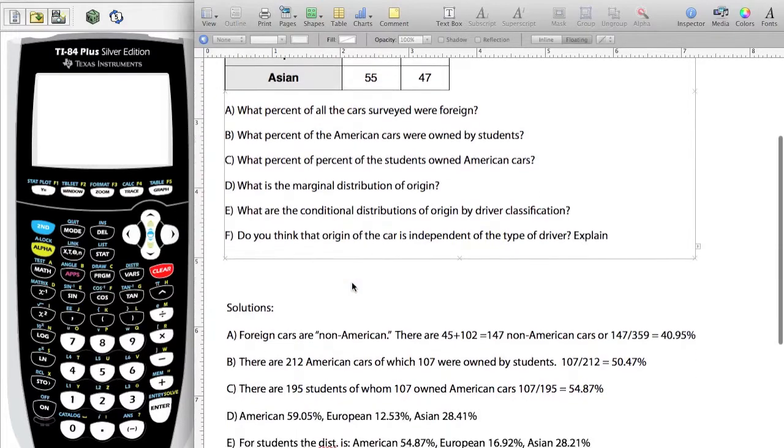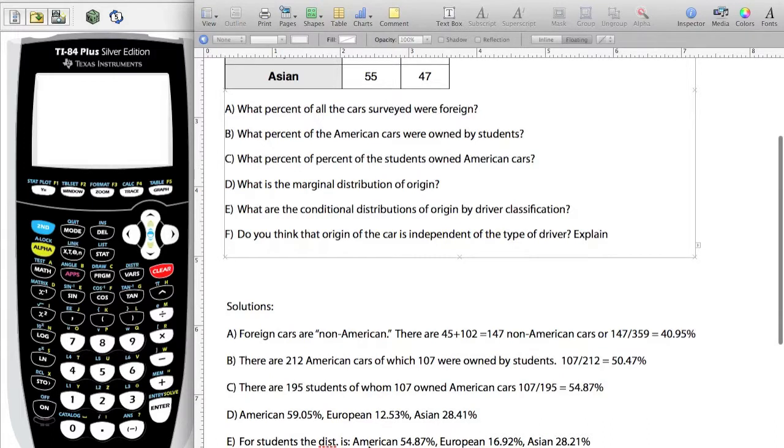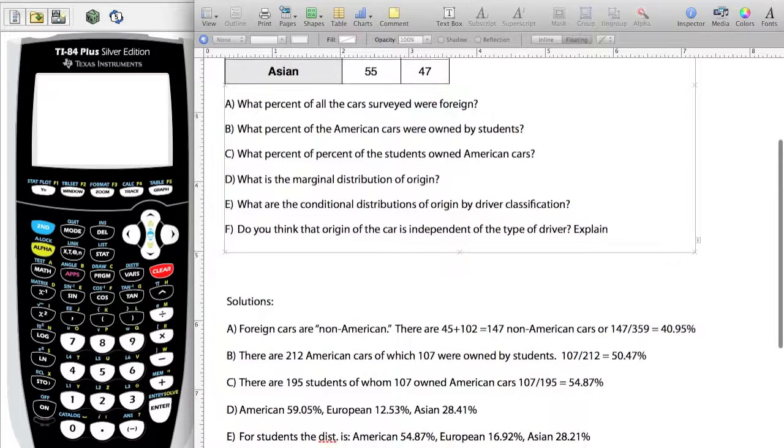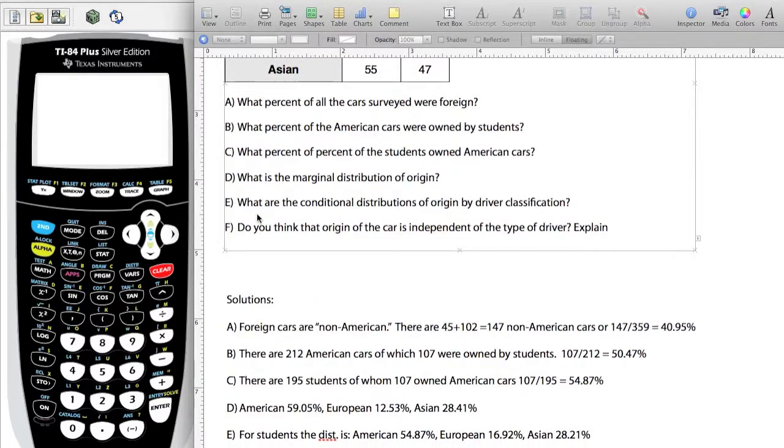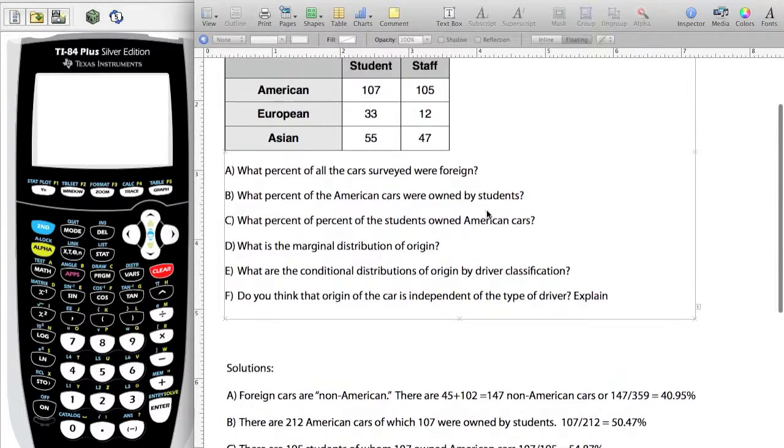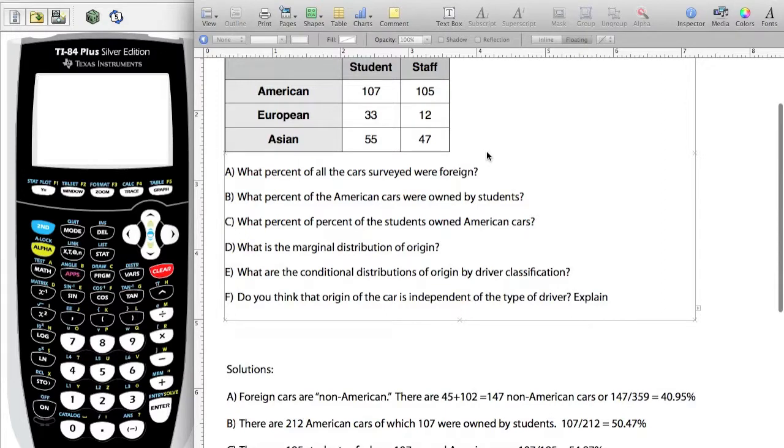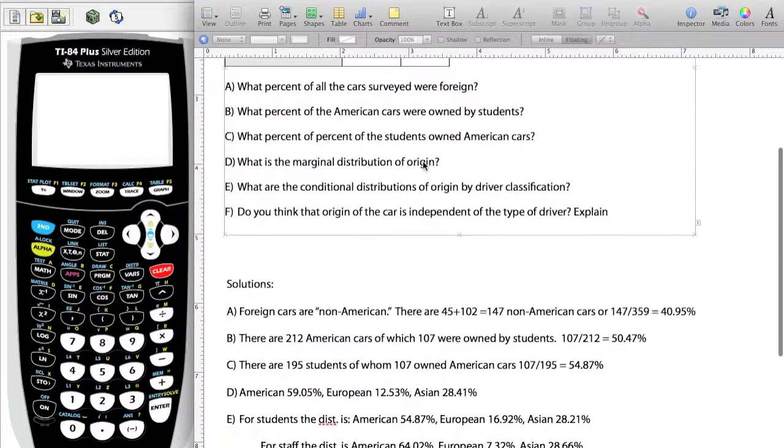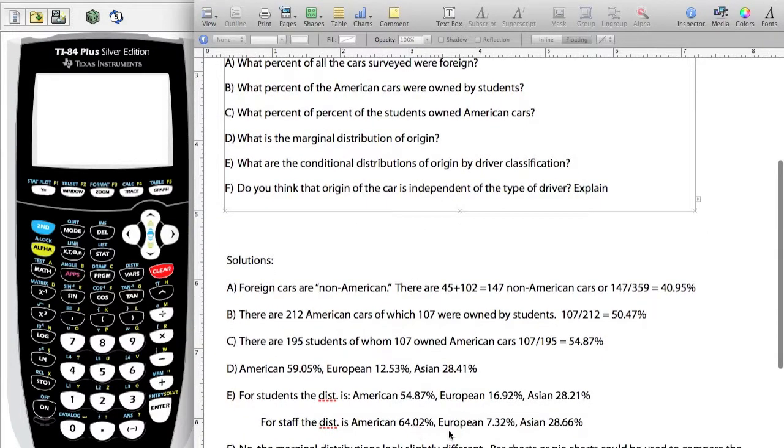For student distribution, we have American as 54.7%, European at 16.92%, and Asian is 28.1%. It says, what is the conditional distributions of the origin? So I want percentages for origins based on each of the driver classifications. You can also look at that for the staff members: 64.02%, European is 7.32%, Asian is 28.66%.